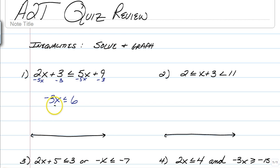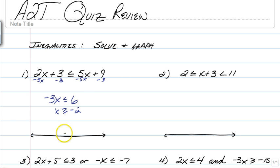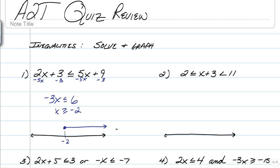But when you divide both sides by negative 3, you must remember to change the direction of the sign. Whenever you are multiplying or dividing by a negative, you must change the sign. So this says x is greater than or equal to negative 2. That's going to be a solid dot pointing to the right. And that's it — you are done with that example.